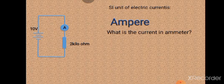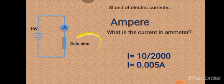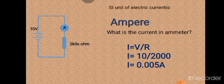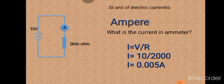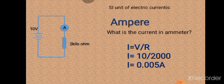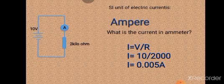You can use Ohm's law: the formula is I = V/R, in which V is 10 volts and R is the resistance — 2 kilohms means 2000 ohms. 10 divided by 2000 will be equal to 0.005 amperes.